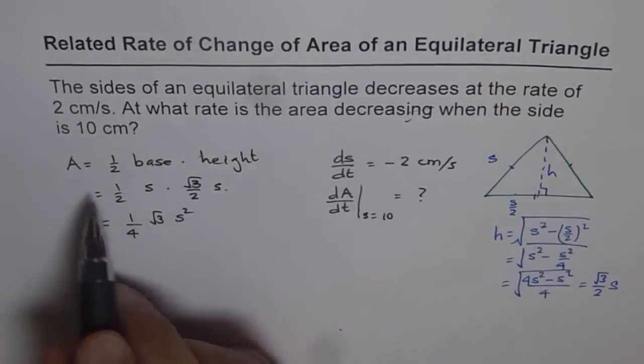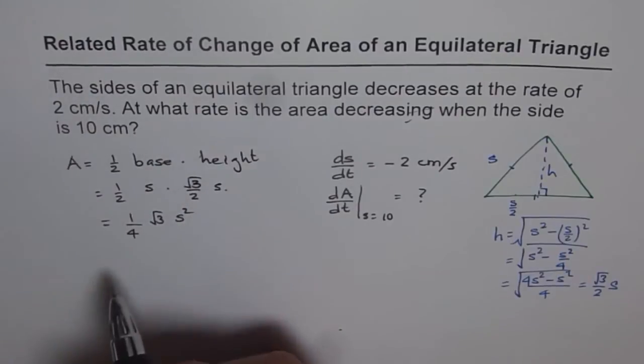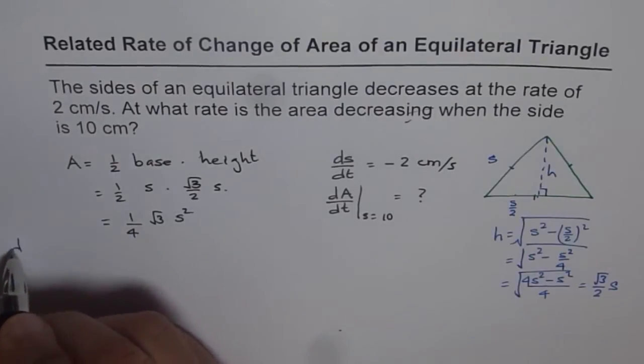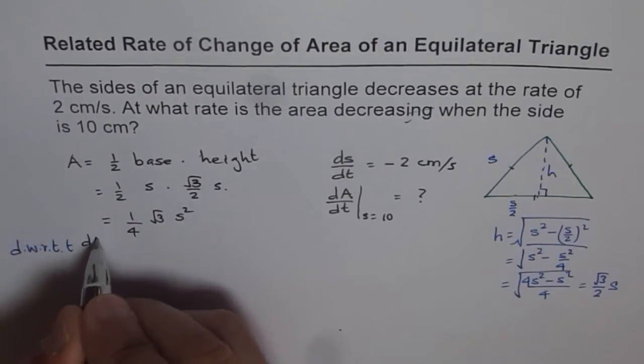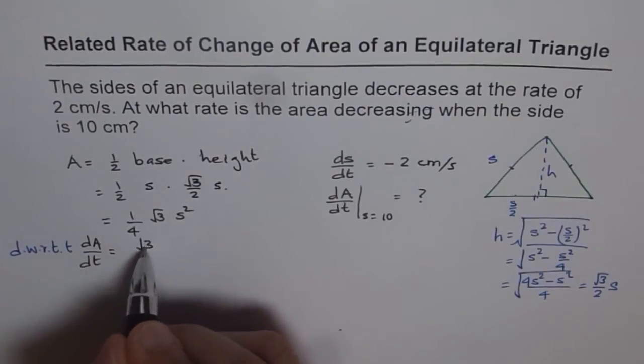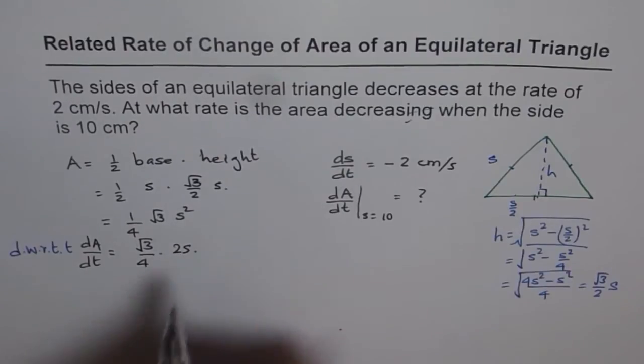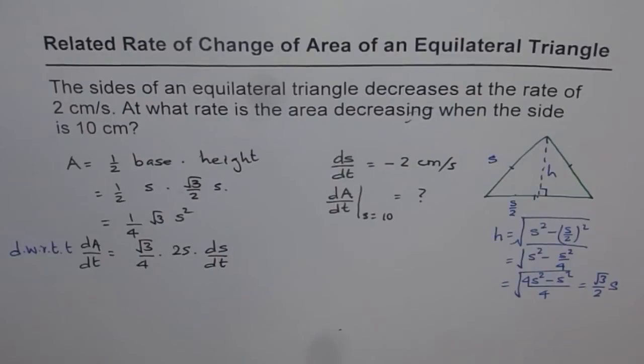So let's differentiate both sides with respect to time. Therefore, it is related rate of change. So we'll differentiate both sides with respect to time. When you do that, we get dA/dt equals to, this is a constant, (√3/4) times 2S times dS/dt. So that is what you get.